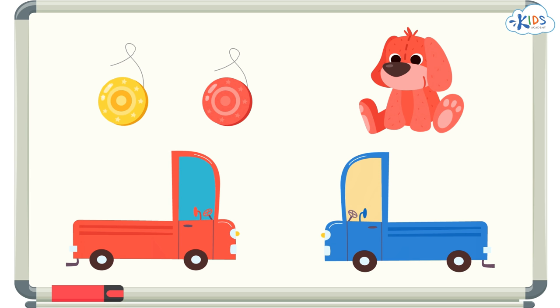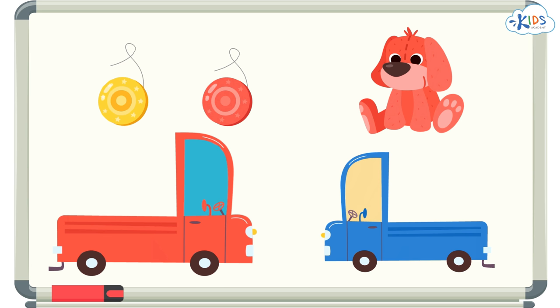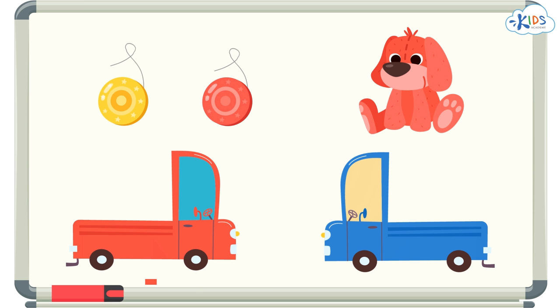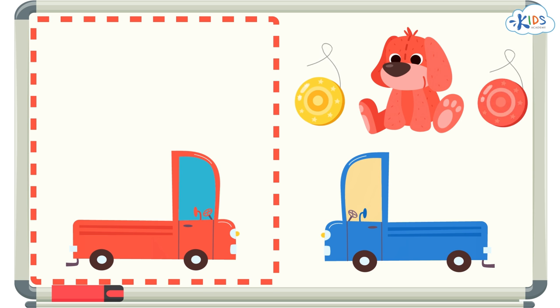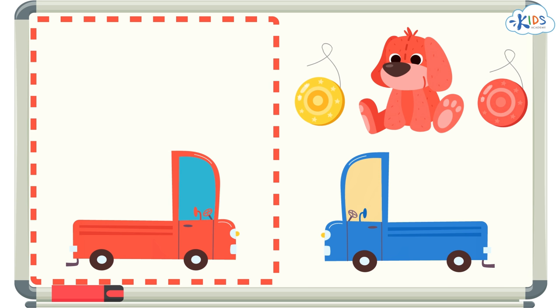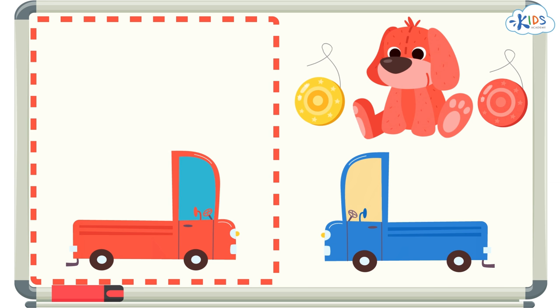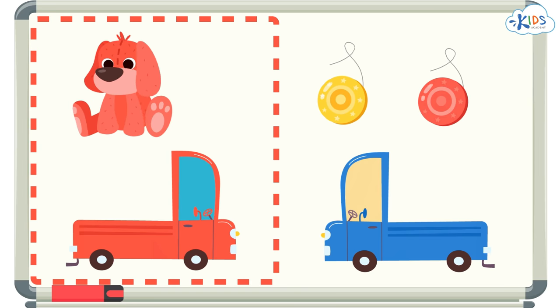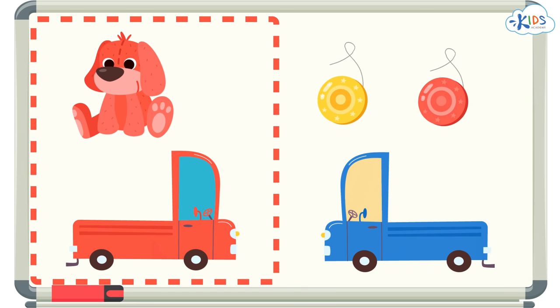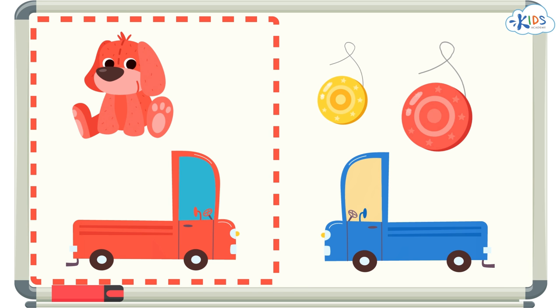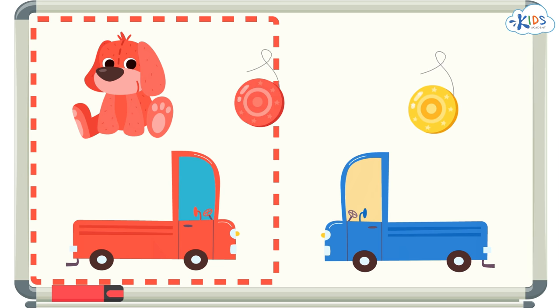Let's find all of the red toys. This toy car is red — let's put it in the group of red toys. Let's see if there are any other red toys. This stuffed animal dog is red, let's put him in the group of red toys. I wonder what his name is. I see another red toy — this yo-yo is red, let's put it in the group of red toys.